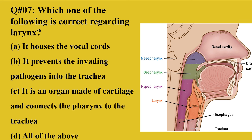The correct option is D, all of the above. The larynx houses the vocal cords and is also known as the voice box. It prevents invading pathogens from entering the trachea, as it is part of the upper respiratory tract. It is made up of cartilage rings and connects the pharynx to the trachea — with the pharynx before the larynx and the trachea after it. So all options are correct.